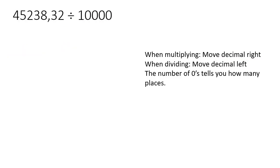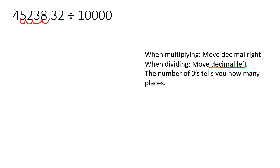Here we are going to divide by 10,000. There are four zeros, and because we're dividing we go left. So we start here and go one, two, three, four — and we end up with 4 comma 52383 2.